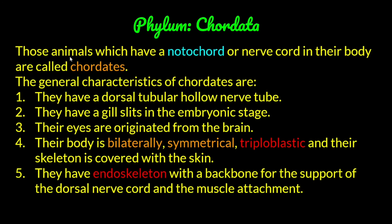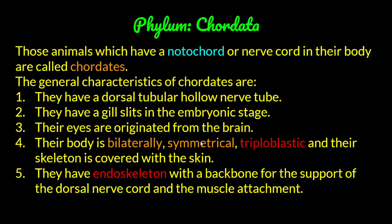Animals which have a notochord in their body are called chordates. The notochord is a rod-like structure — it is like an underdeveloped backbone. The general characteristics of Chordata are: they have a dorsal tubular hollow nerve tube, they have gill slits in their embryonic stage, and their eyes originate from the brain. Their body is bilaterally symmetrical and triploblastic.